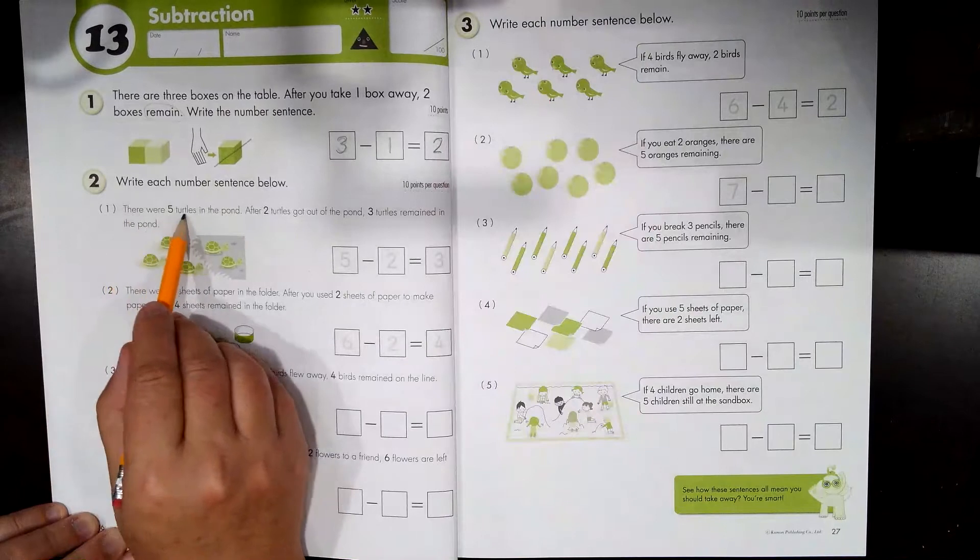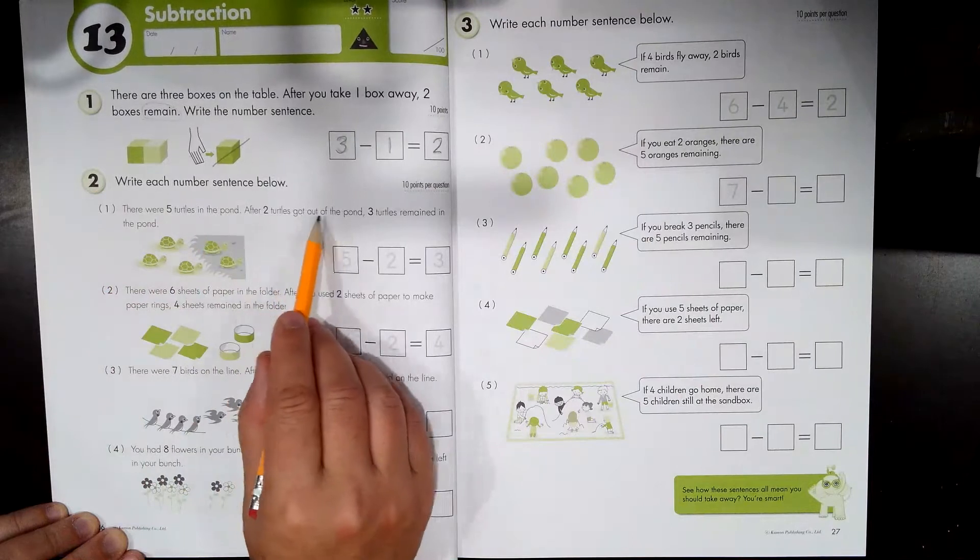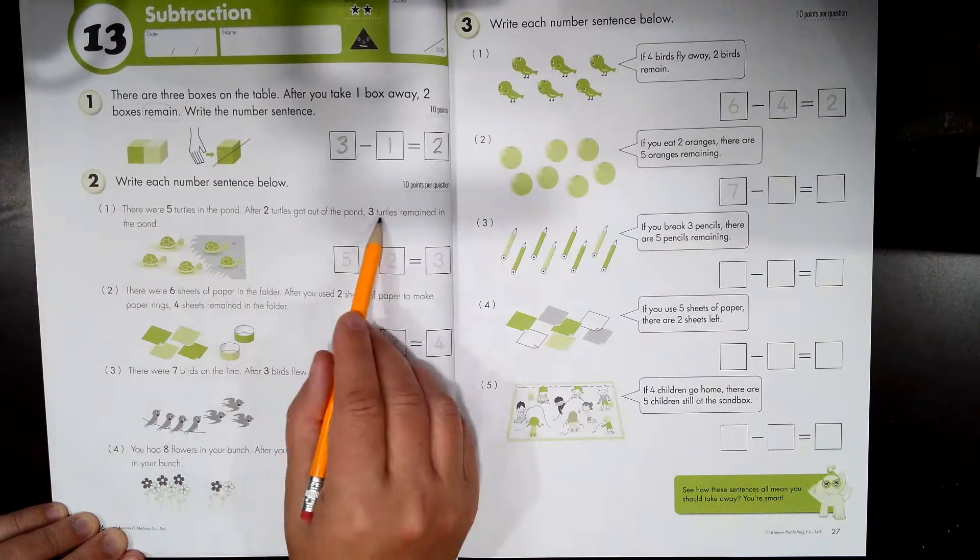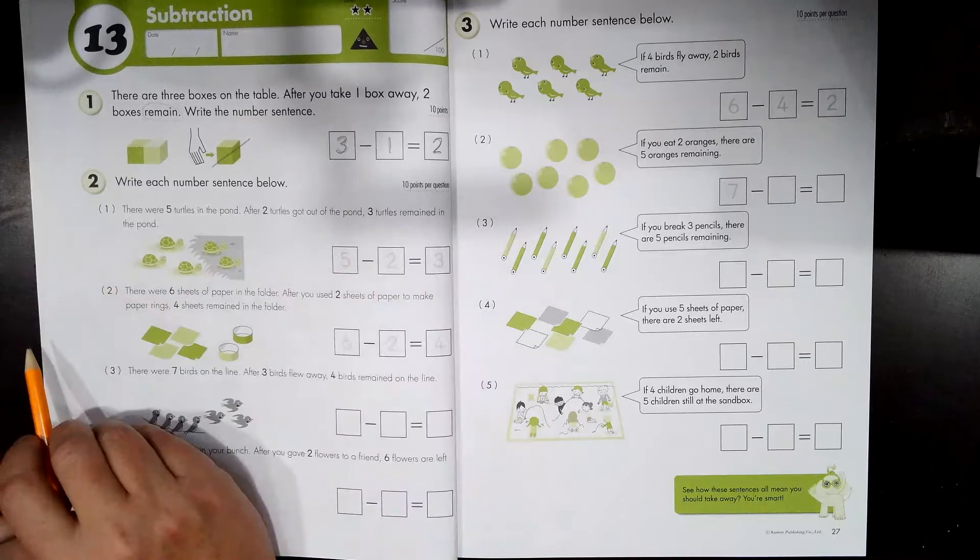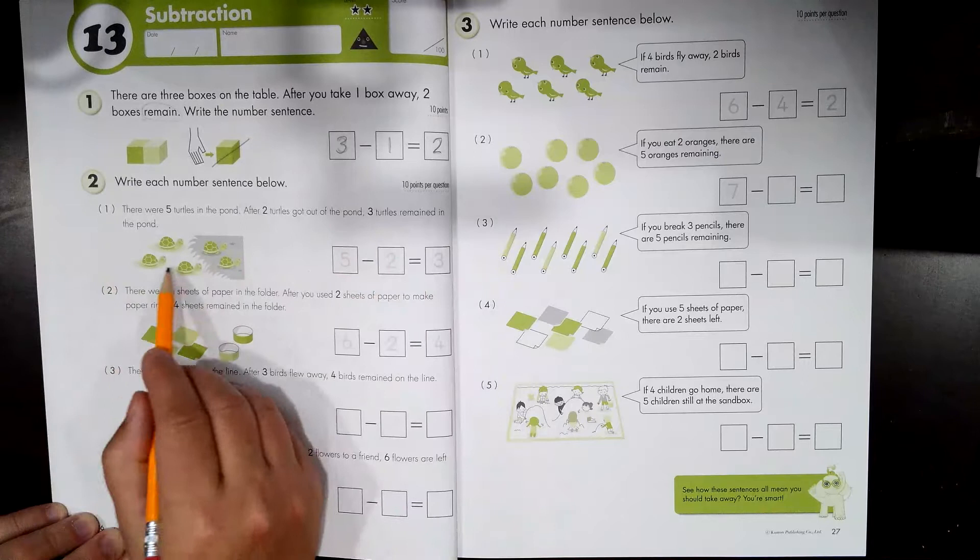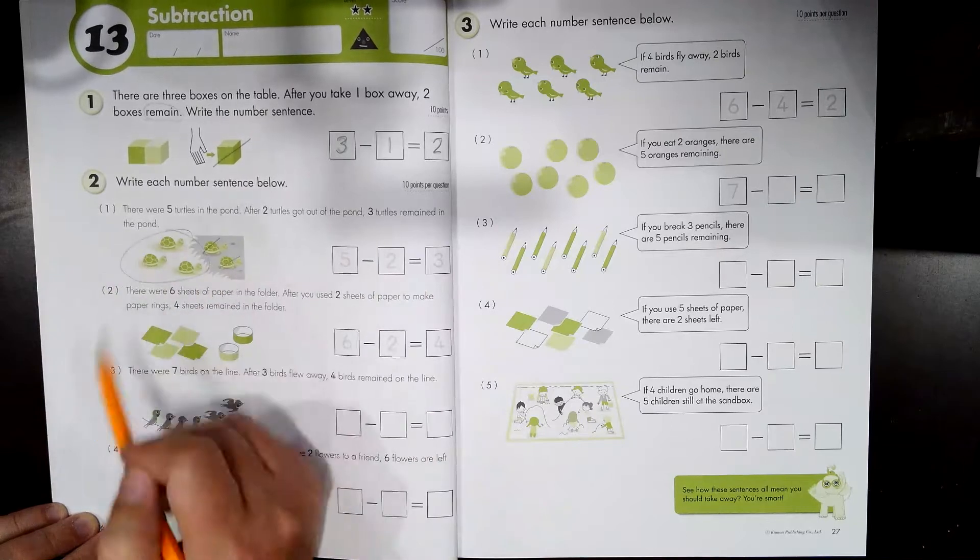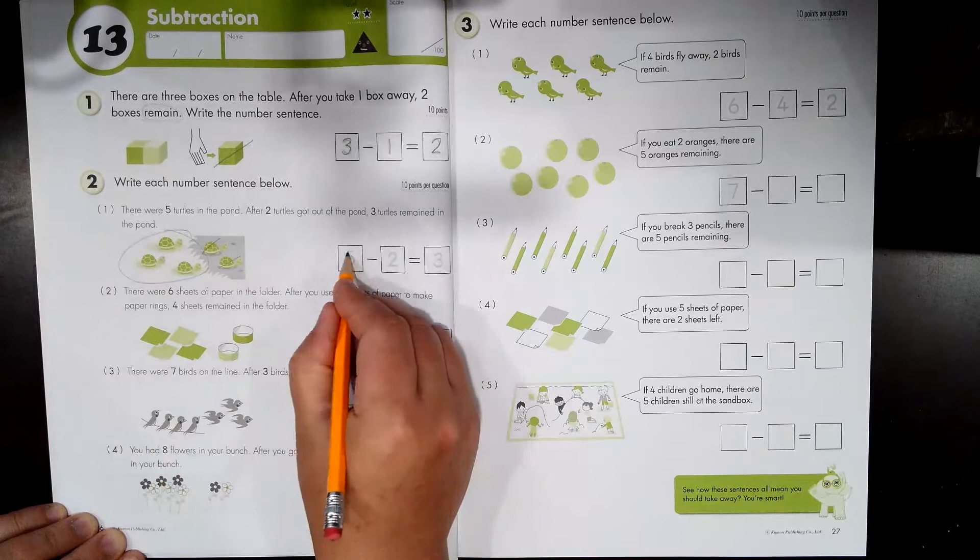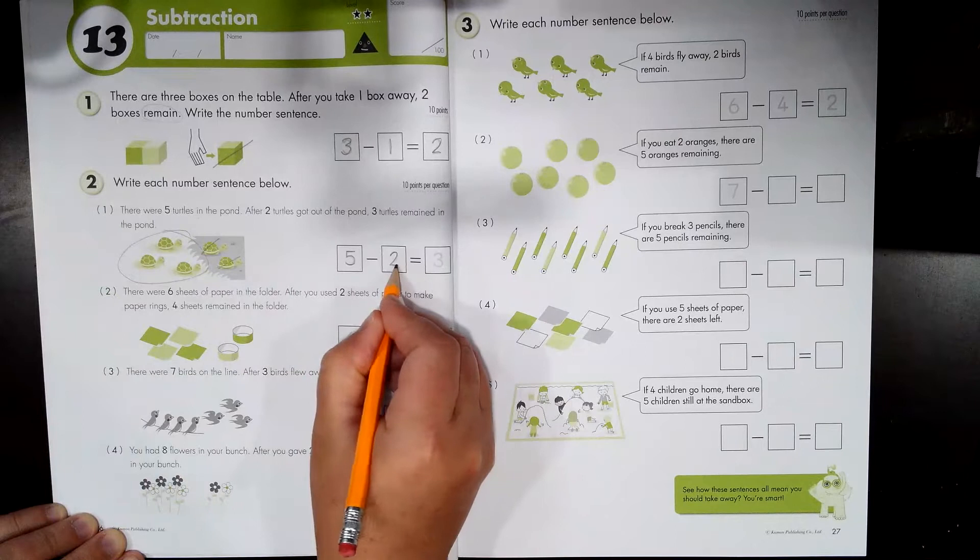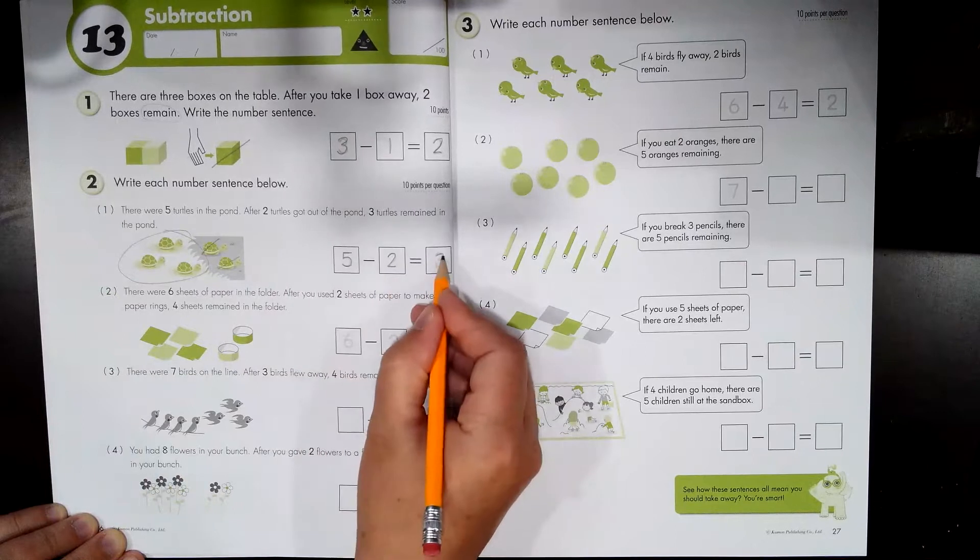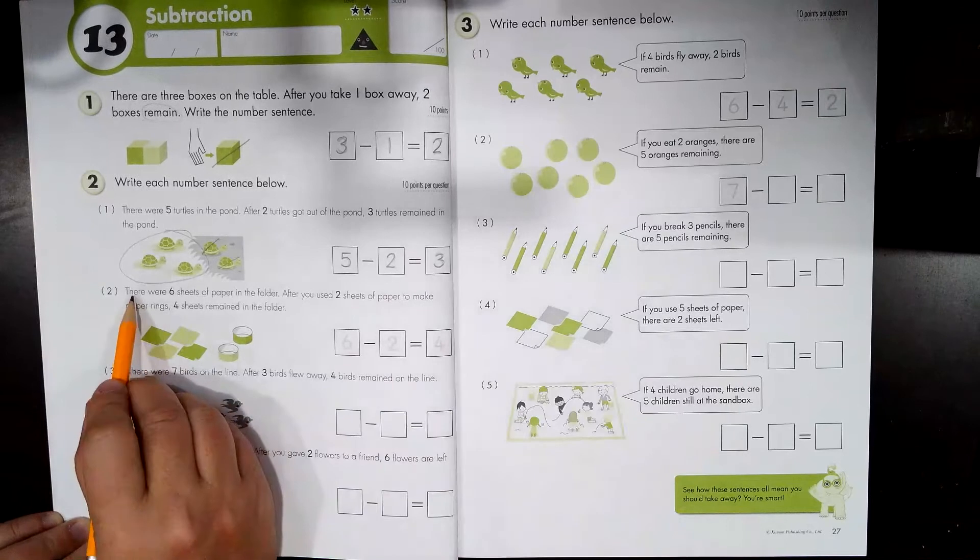There were five turtles in the pond. After two turtles got out of the pond, three turtles remained in the pond. So we have turtles in the pond and two left. That means three remain. So there are five turtles minus two that left equals three turtles. Read the next one.